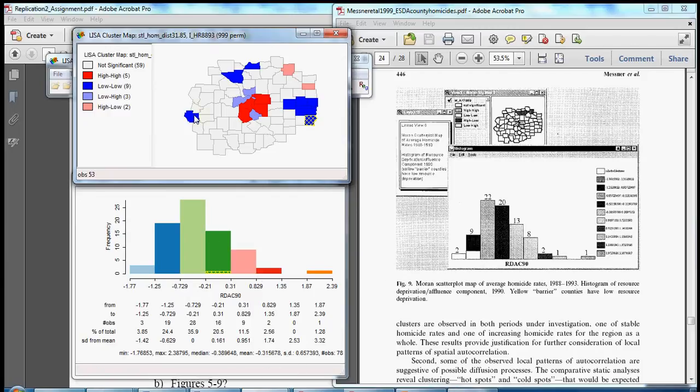Whereas the high-violence cluster is all over the map in terms of resource deprivation affluence. We could check this with the other low that's also in the center, that's also in the center, and that's also in the center. So all of the cores of statistically significant low-low clusters of violence have kind of modal or average values on the resource deprivation affluence component. We might think more systematically about what this means in terms of violence prevention, violence reduction.